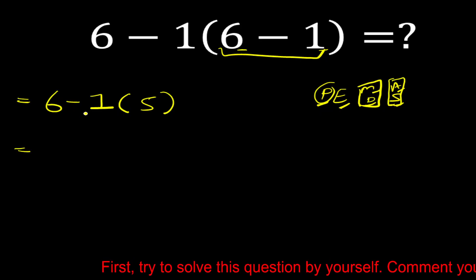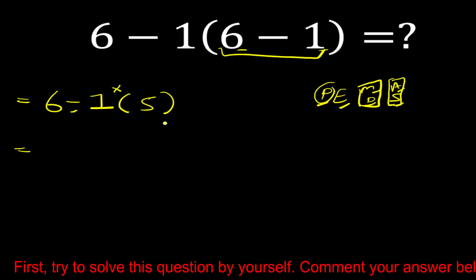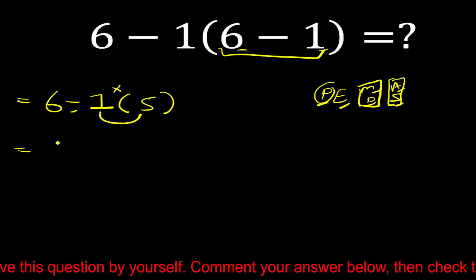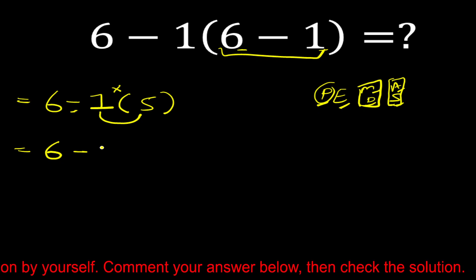Now look this again. Here is one subtraction and here is one multiplication. So according to PEMDAS rule, second priority is multiplication. So 6 minus 1 multiply 5 is equal to 5.